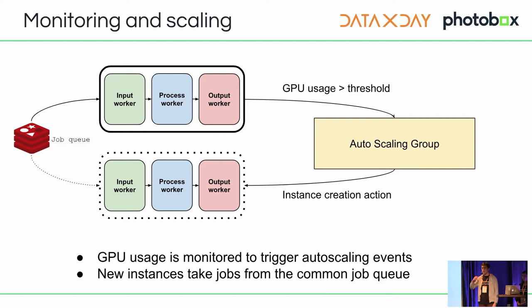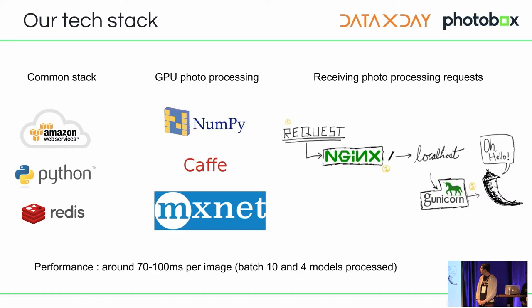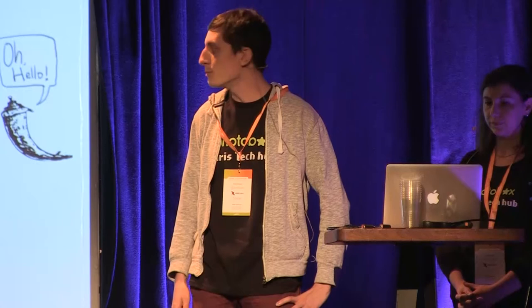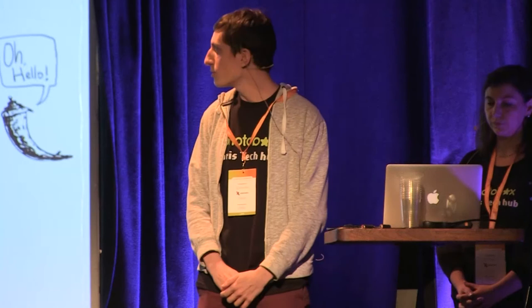We rely on Amazon Web Services and Python for much of the code. We use Redis for the queue system. For GPU processing — neural networks and image loading — we use NumPy, Caffe, and MXNet. For web APIs we use a classical stack: nginx, gunicorn, and Flask in Python. To give a small idea of performance, it takes around 100 milliseconds to process a picture, and we calculate four different deep learning models.